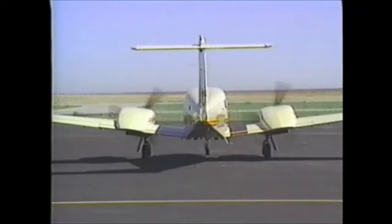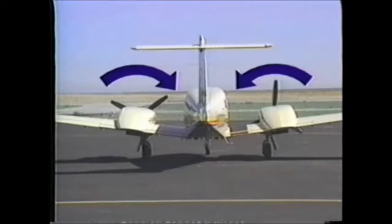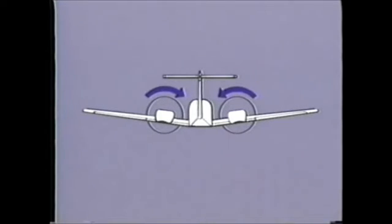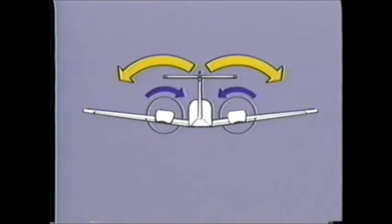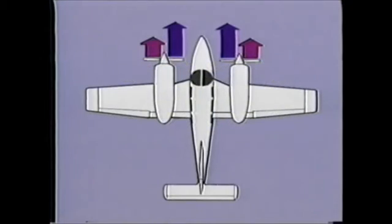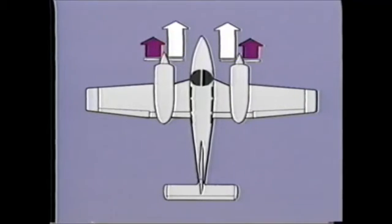Some twins have what are called counter-rotating propellers, where the right engine rotates in the opposite direction of the left. In this case, the airplane has no rolling tendency since the torque of each propeller cancels out the other. Also, there is no tendency to yaw to the left. P-factor is eliminated by placing the descending blade of each engine closest to the fuselage. In this case, neither engine is considered critical.